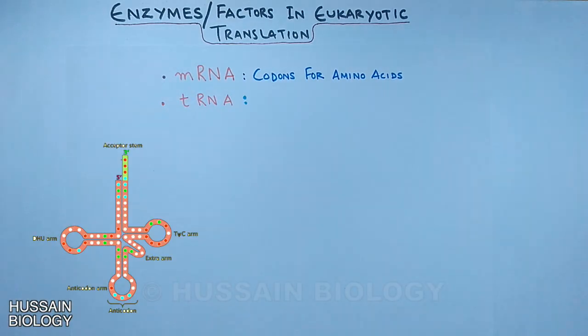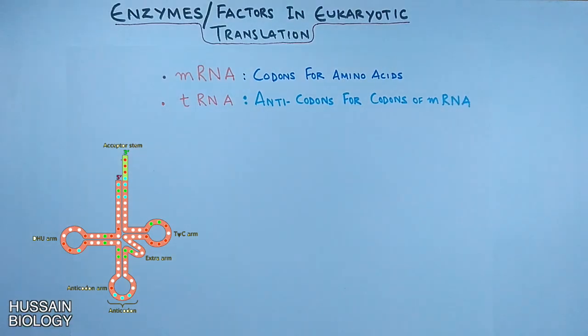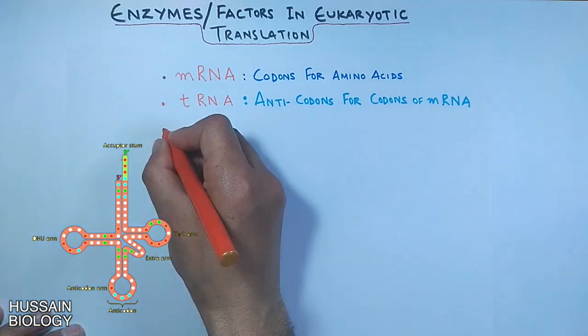Then we have tRNA molecule which has anticodons for codons of mRNA for base pairing during the process of translation. This tRNA adds specific amino acid to its structure and carries it to the ribosome, and for this catalyzation reaction we have tRNA synthetases.